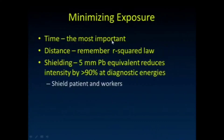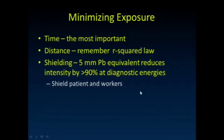In terms of minimizing exposure, time is the most important thing — the least amount of time the fluoroscopy can be on, the better for the patient. Remember the inverse square law. When doing a fluoro exam, stay at arm's length — no need to stand right up against the table. Wear shielding: 5 millimeters of lead equivalent reduces intensity by about 90% at diagnostic energies. We want to shield patients and workers, but shielding patients is complicated — in a CT scan, most dose received by organs inside the body comes from scatter inside the body. Putting a shield over the patient doesn't help and can actually make it slightly worse due to backscatter.